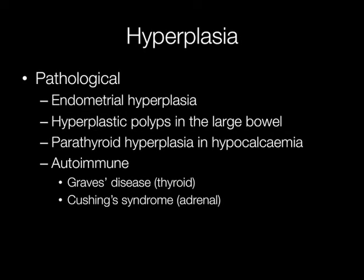Hyperplasia may also be pathological. For example, endometrial hyperplasia due to excess production of oestrogen. Metabolic problems such as hypocalcaemia can result in hyperplasia of the parathyroid glands. And autoimmunity may play a role in hyperplasia in conditions such as Graves disease and Cushing's syndrome.